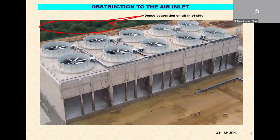I spoke about obstructions to airflow around the air inlet. This is one photograph taken from a site where you see on the backside there is a lot of vegetation. On the front side, because there are other equipment and facilities provided, it has been concretized well — no obstructions to air entry. But on the other side, there is a forest that affects the airflow on the other side for this back-to-back tower.